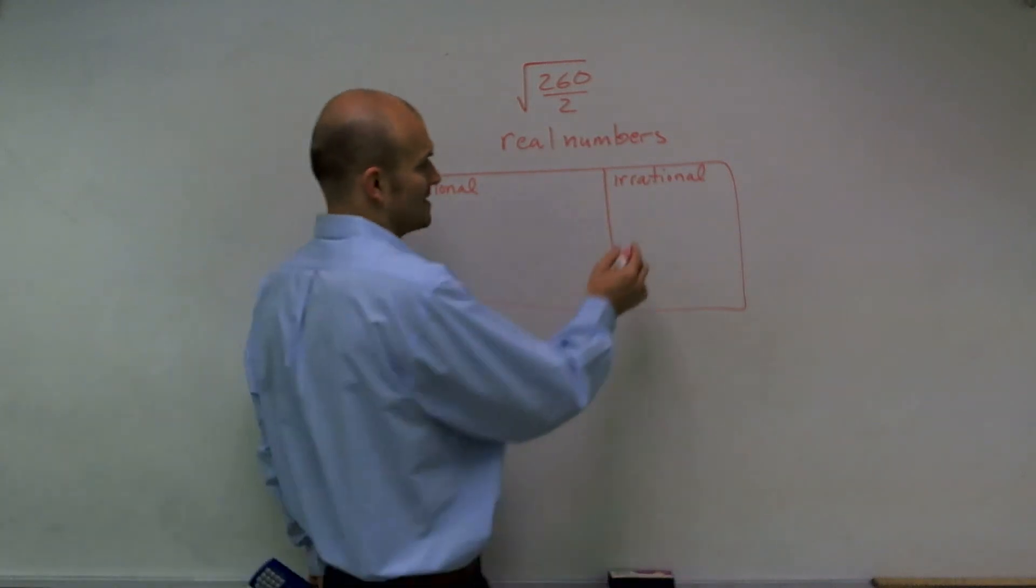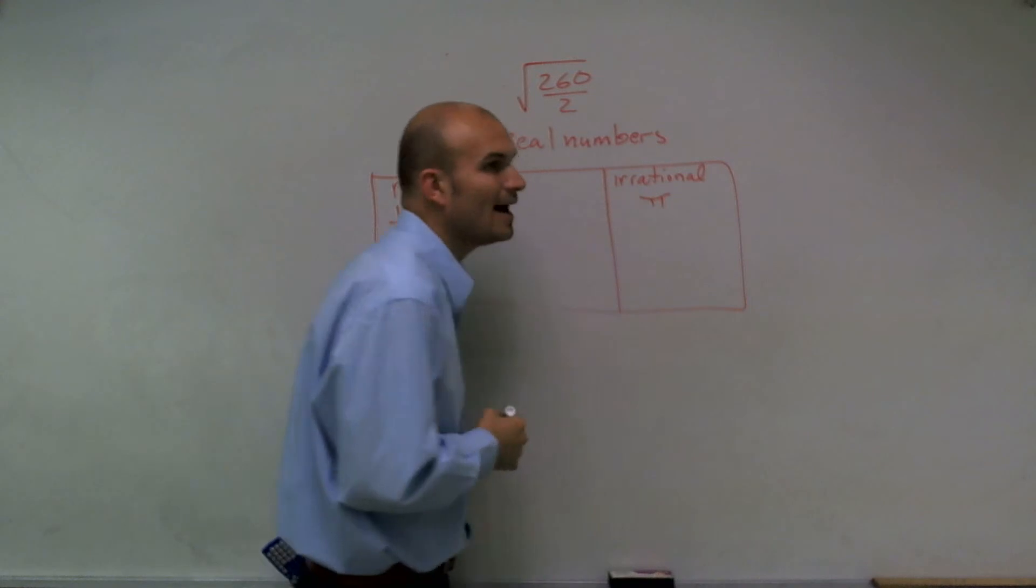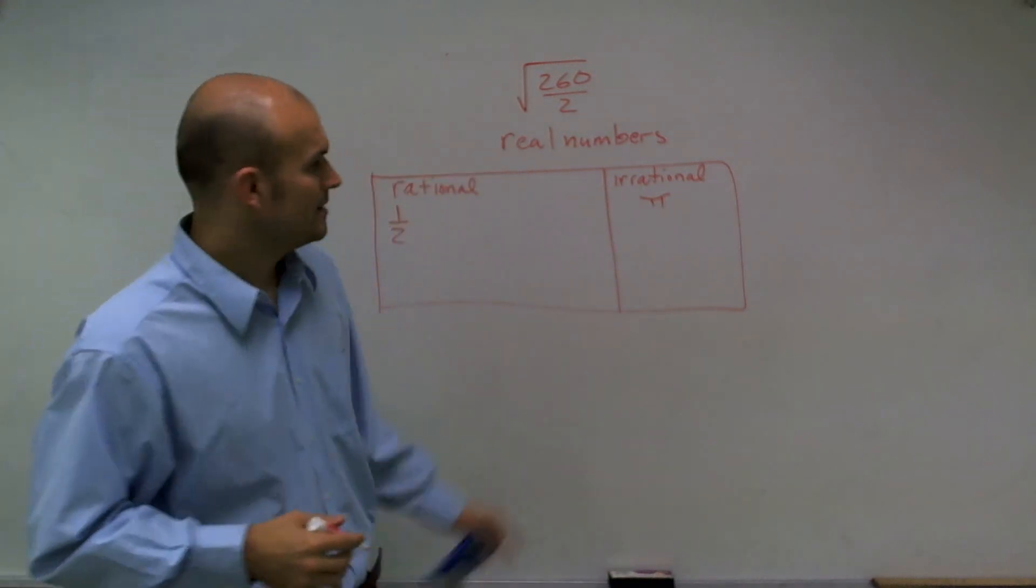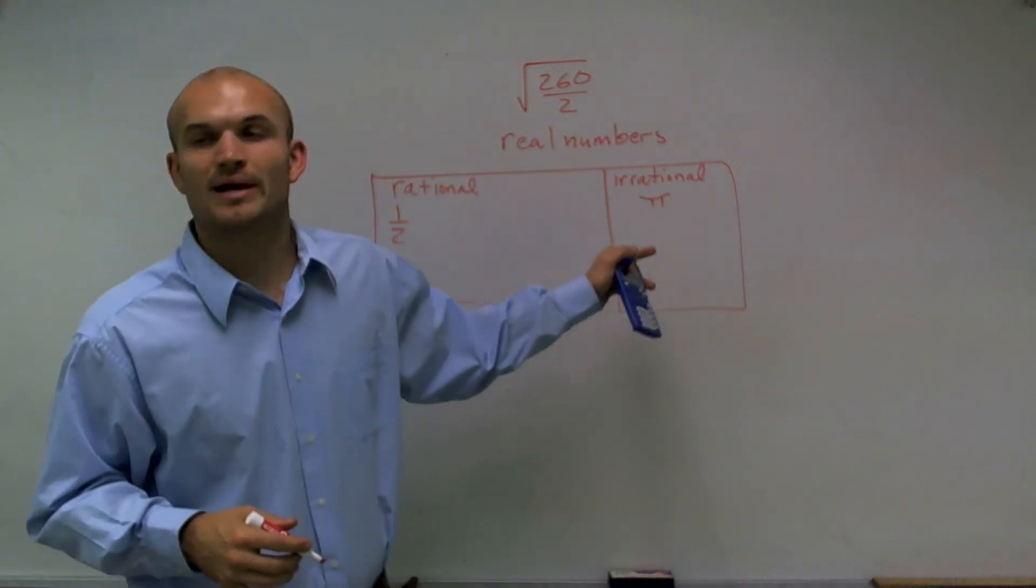Now, you might say, well, you can write pi as a fraction, pi over 1. But that's just an approximation when I write that symbol pi.